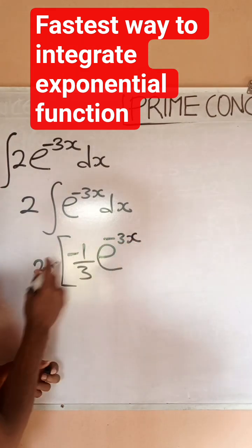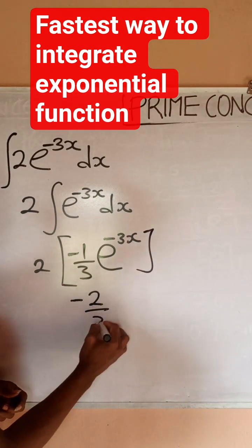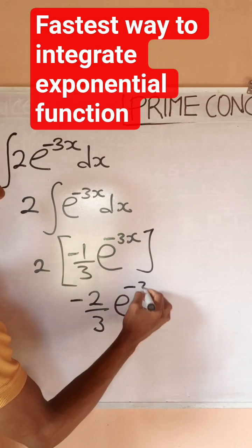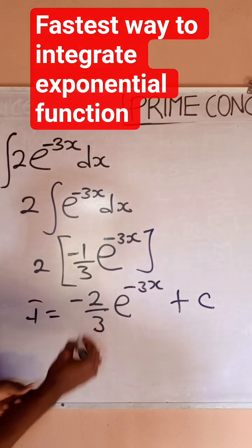So this is what I have. So if you open this, this would simply give us minus 2 over 3, exponential, minus 3x, then plus a constant of integration.